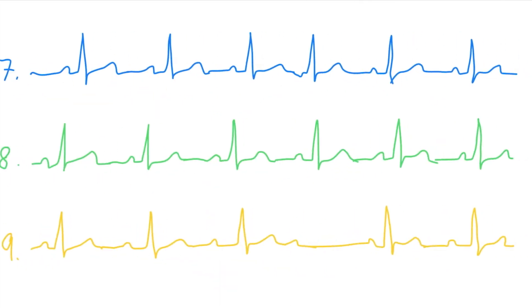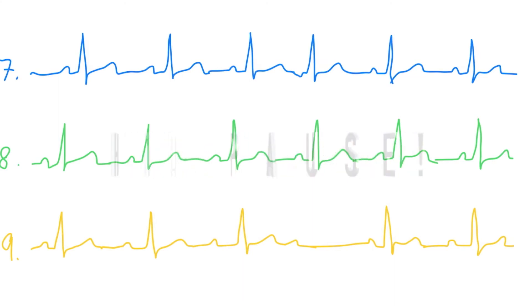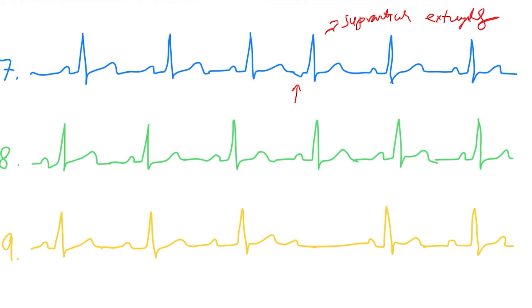What about this one? Seven. AV block also? No, no, it's not AV block. Some things can repeat, of course. You see P? Negative P over here? Suprasystole. Not suprasystole, but extrasystole — and supraventricular. Very good. Supraventricular or atrial supraventricular extrasystole. Or, in other words, suprasystole.